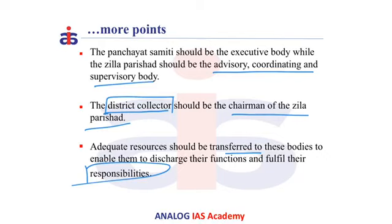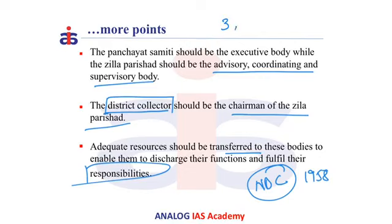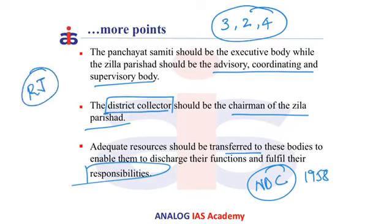The recommendations of this committee were accepted by the National Development Council in 1958, which recommended that states adopt these principles but left it to the states to evolve their own patterns suitable to local conditions. Therefore, each state had a three-tier system, some had a two-tier system, and some had a four-tier system as well, leading to a lot of confusion. For the prelims perspective, Rajasthan was the first state to establish a Panchayati Raj system in India, in the district of Nagore, in the year 1959.